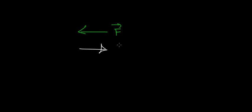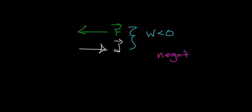As a general principle, when the force vector points in the opposite direction of the displacement vector, the work is going to be less than zero — we say the force does negative work on the object. When a force does negative work on an object, it slows the object down, decreasing its velocity, which also decreases the object's kinetic energy.